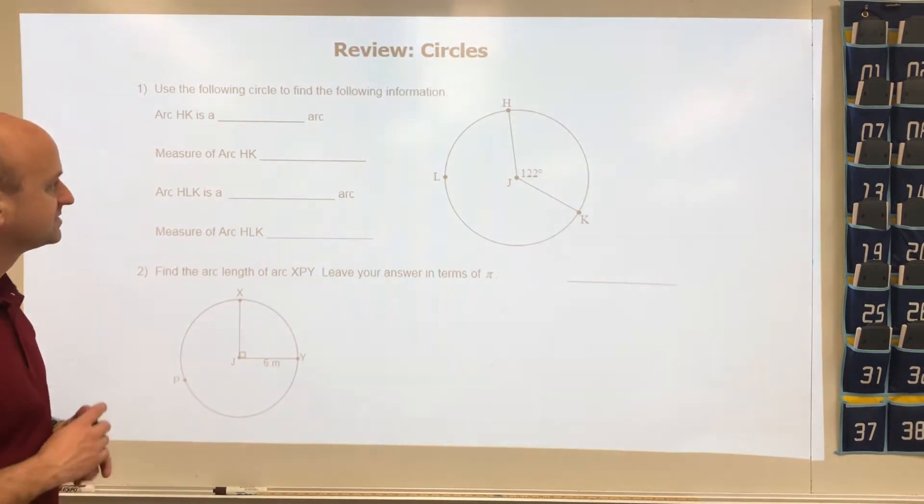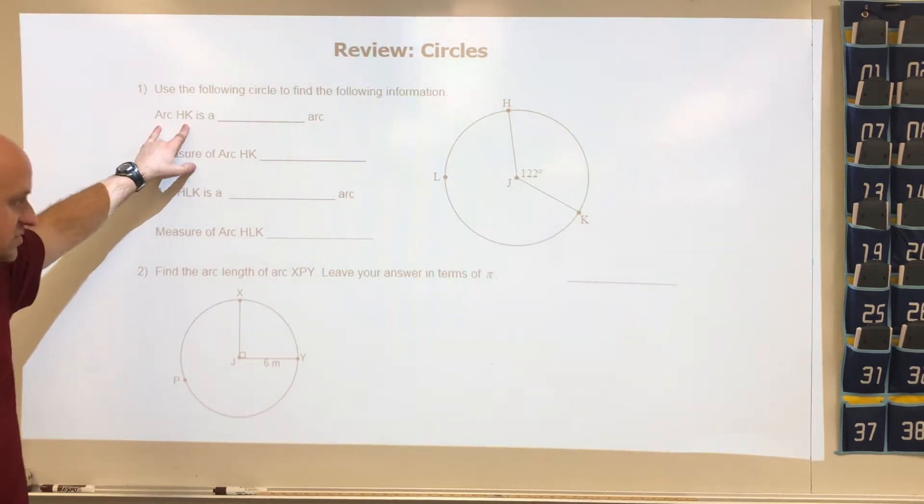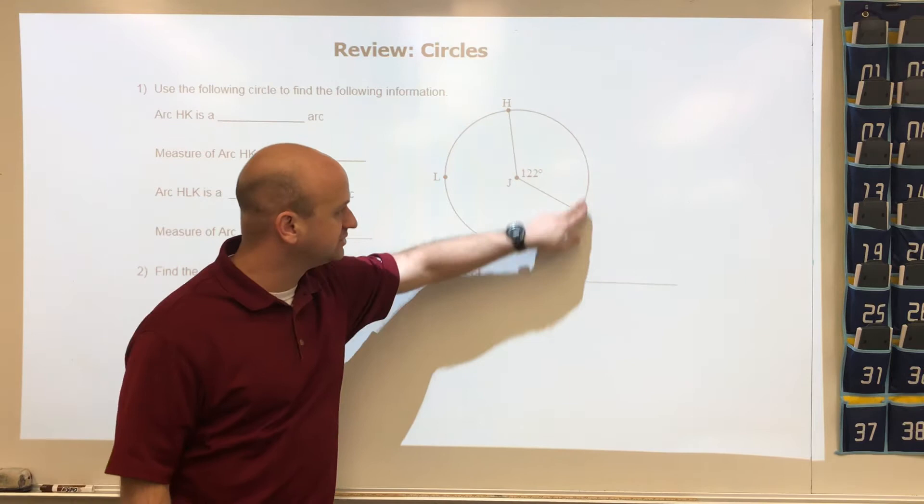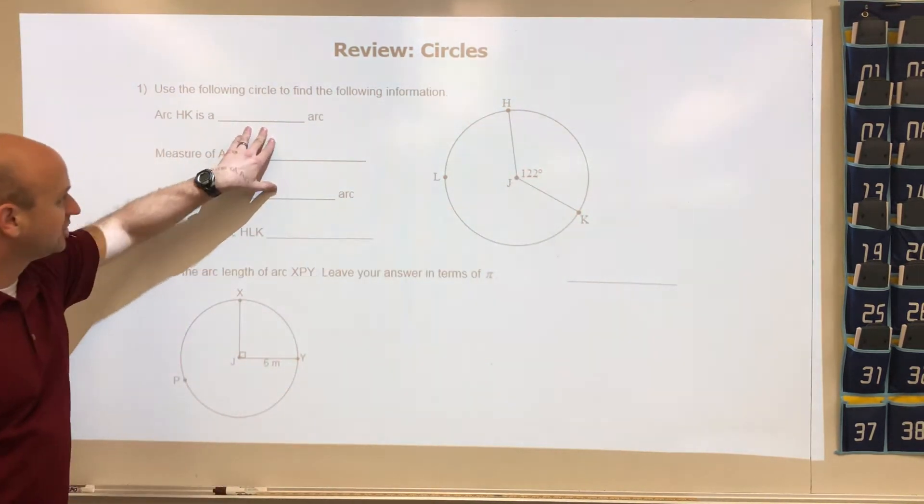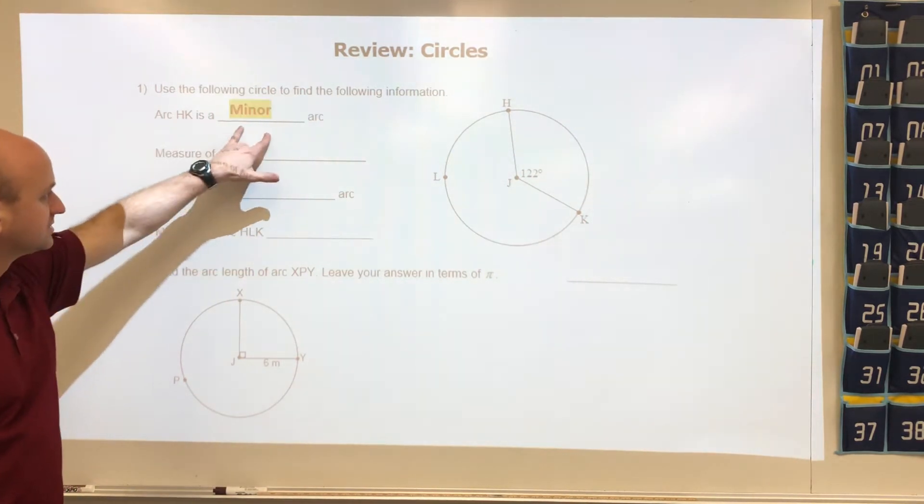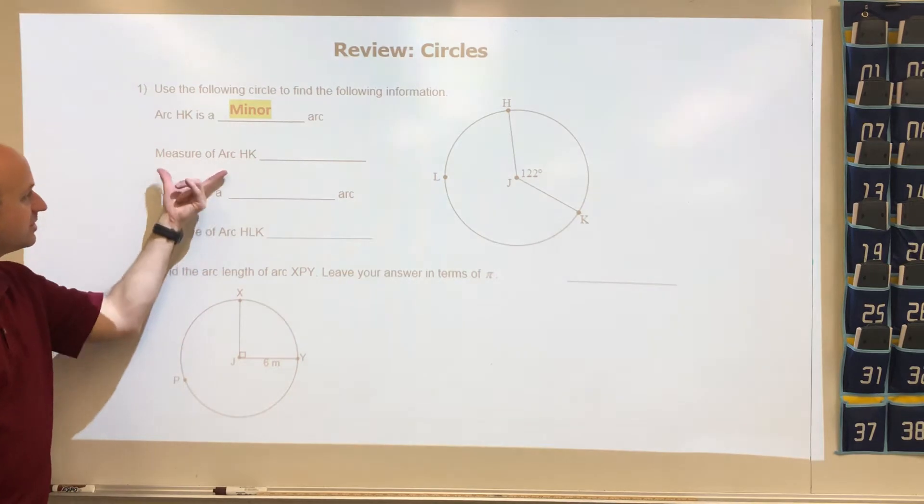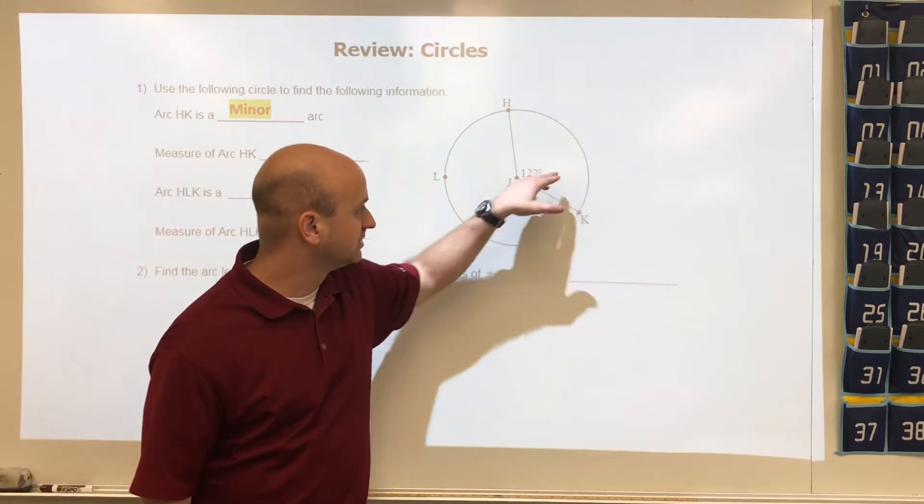First question says arc HK, so if we look here, arc HK is going to be here. We know that the arc is going to equal the central angle, and it's also a minor arc. So this is actually a vocabulary question. This is going to be minor.